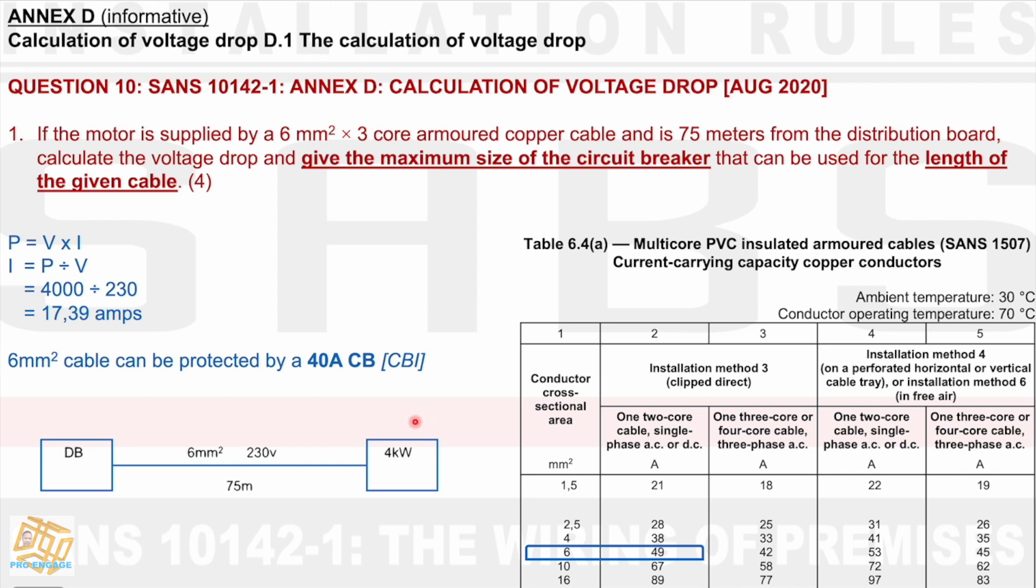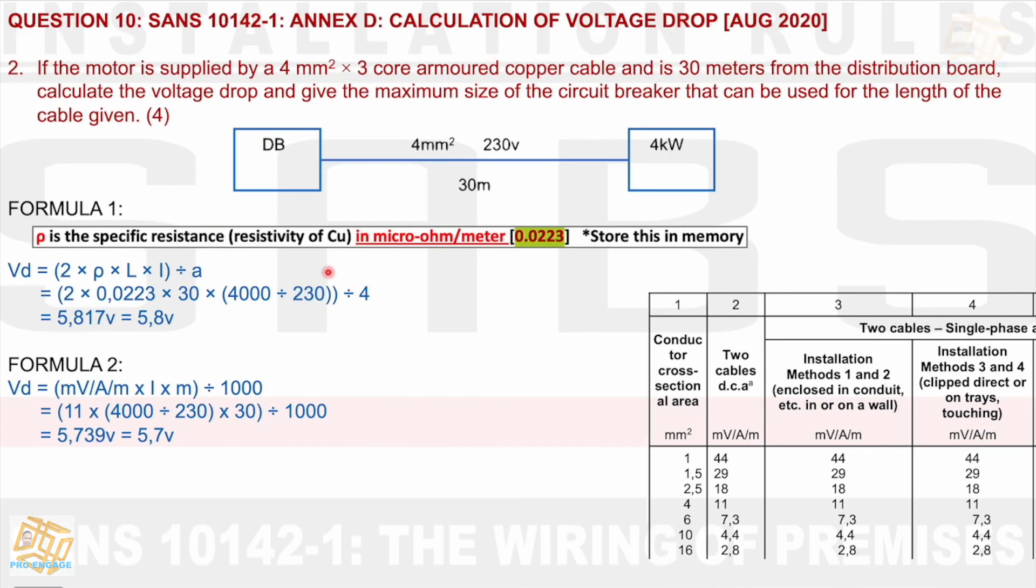For question two, it would look similar, but the distances would change. And I think almost that we're going to be in between cable sizes and we'll be looking at these values over here in the next sum. Question two, they use 4 millimeters squared and they use a distance of 30 meters. We then say formula one, I've used again formula one and two. Let's see what the first formula does. I inject the values and I can again get 5.8 volts, 5.817, which I then derive to be 5.8 volts.